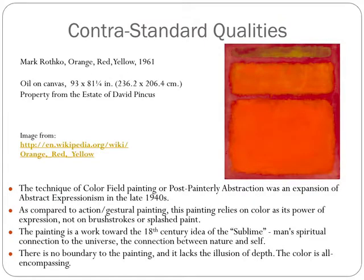The last painting we will discuss in relation to contra-standard features is Mark Rothko's Orange Red Yellow. As mentioned in earlier slides, it is non-representational and part of color field painting, or post-painterly abstraction. This technique became so common among a group of artists in the late 1940s that eventually it was an expansion of Abstract Expressionism. In contrast to action-gestural painting, Orange Red Yellow relies on color as its power of expression, not on brushstrokes or splashed paint. This painting, and others like it, works towards the 18th century idea of the sublime, which relates to man's spiritual connection to the universe, as well as the connection between nature and self. The colors are all-encompassing, there is no boundary to the painting, and it lacks the illusion of depth.